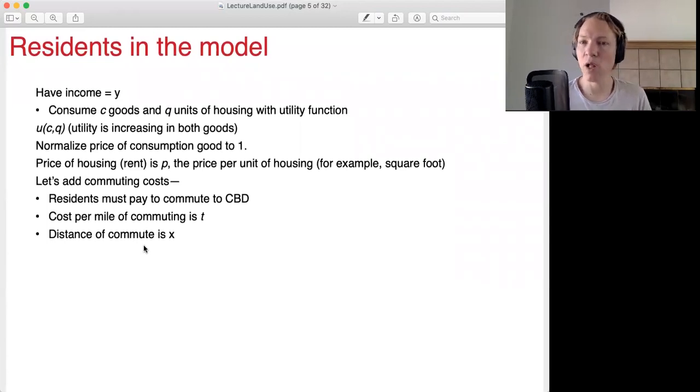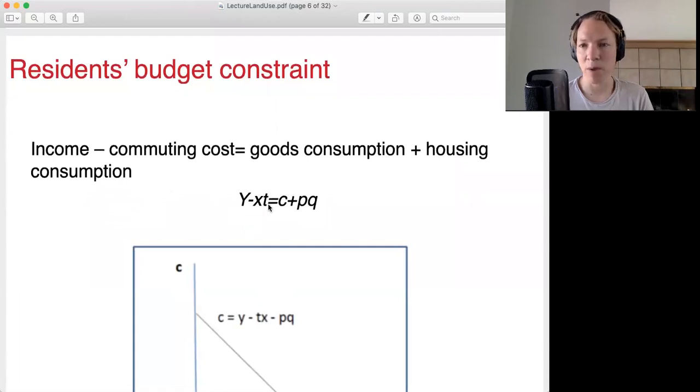Now we're going to add commuting to the model. So if I live outside the central business district at a distance of X—you could think of this X represents mileage from the center. If I live five miles from the center, this X is five. Say the cost of commuting is T per mile. So therefore my budget is going to be my take-home pay, Y, my income minus my commuting costs. So whatever my commuting costs, you could think about this as monthly, this is my monthly income minus my monthly commuting costs, which will be how many miles I live away from the city times the cost per mile. I need to take that out of my income.